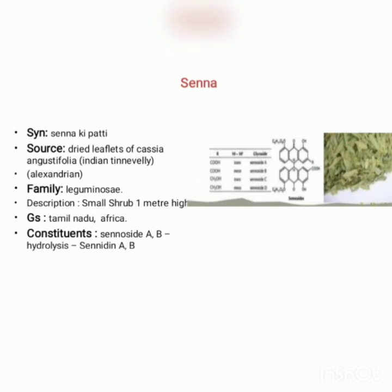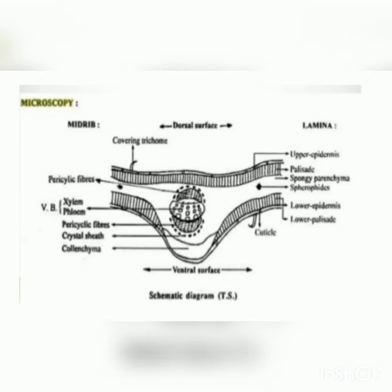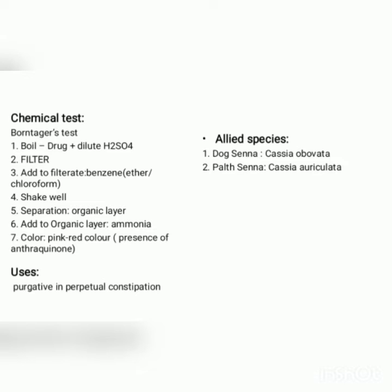Senna. Synonym: Senna ki pati. Biological source: dried leaflets of Cassia angustifolia (Indian senna), Cassia acutifolia (Tinnevelly), and Alexandrian senna, belonging to family Leguminosae. Description: small shrub, 1 meter height. Geographical source: Tamil Nadu and Africa. Constituents: sennoside A and B, which on hydrolysis give senidine A and B. Chemical test — Borntrager's test: boil the drug in dilute H₂SO₄, filter, and to the filtrate add benzene, ether, or chloroform; separate the organic layer and add ammonia; a pink to red color confirms the presence of anthracene. Uses: purgative in habitual constipation. Allied species: dog senna (Cassia obtusata) and pal senna (Cassia auriculata).